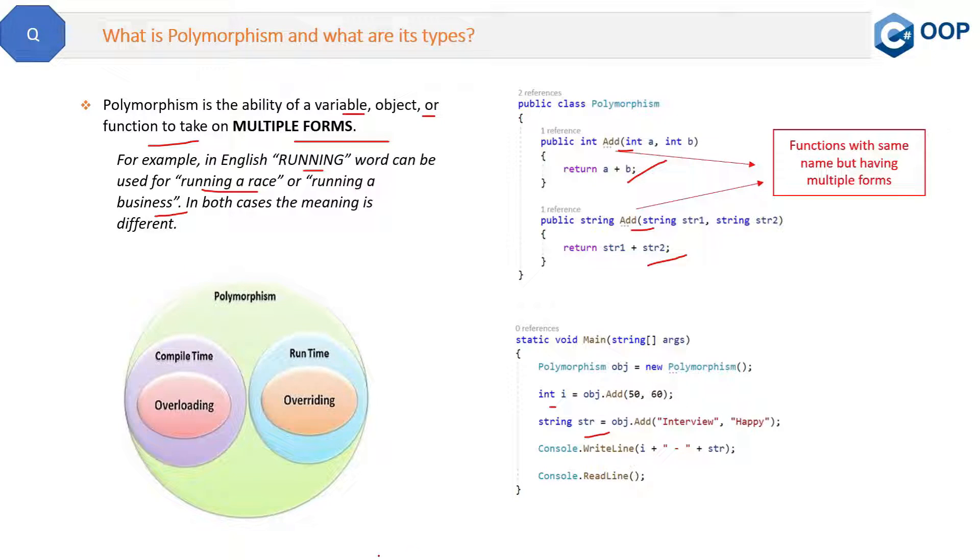One is compile time and another one is runtime. What is the difference? Compile time is basically overloading and runtime is overriding. Compile time means when you build your project in .NET, then .NET Framework starts converting your C# code into machine language and will create the DLLs. This duration of conversion is called compile time.